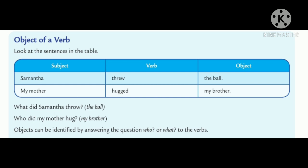What did Samantha throw? The ball. Who did my mother hug? My brother. Objects can be identified by answering the question who or what to the verbs.